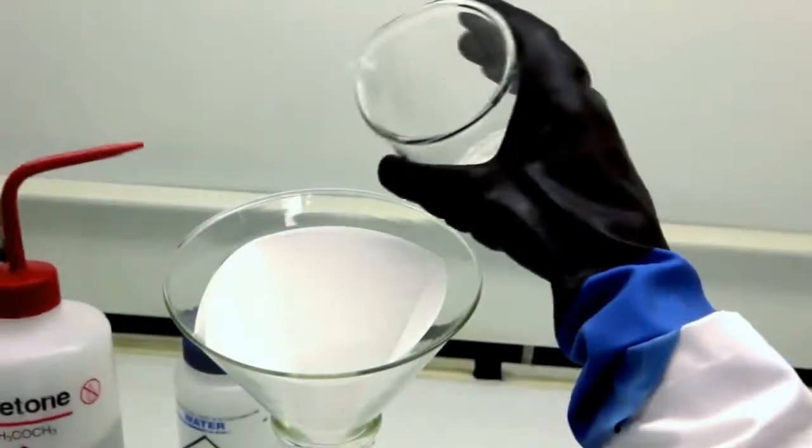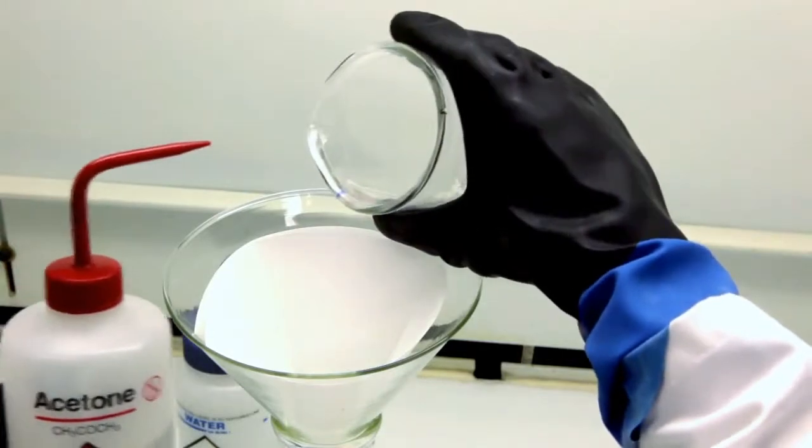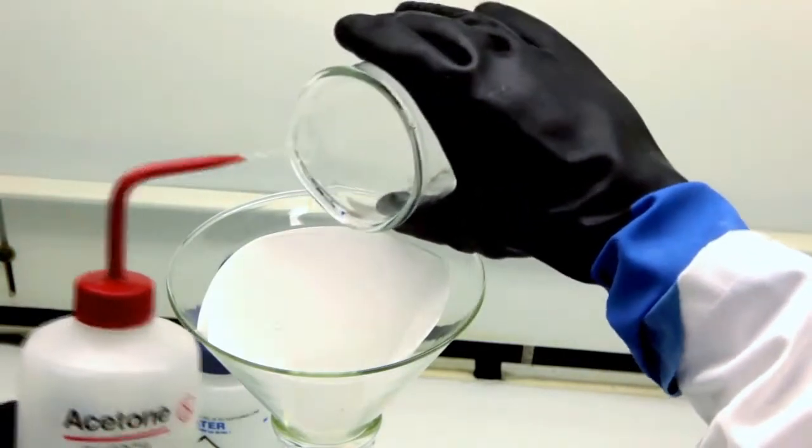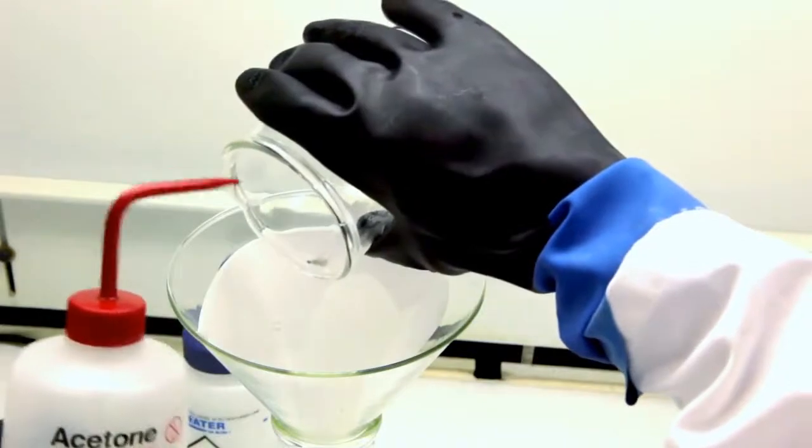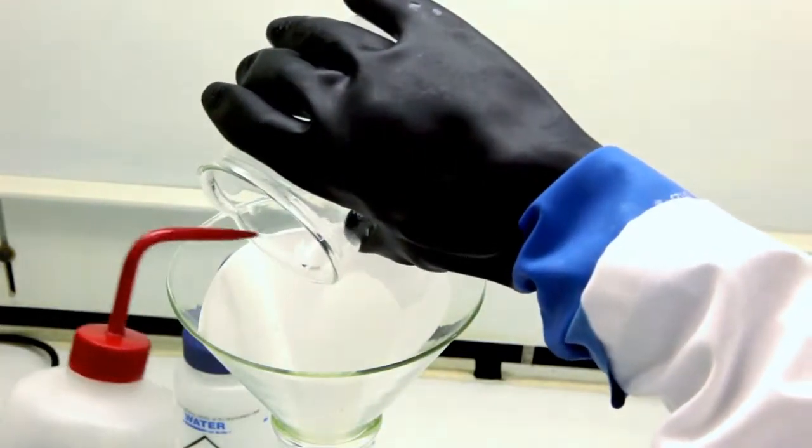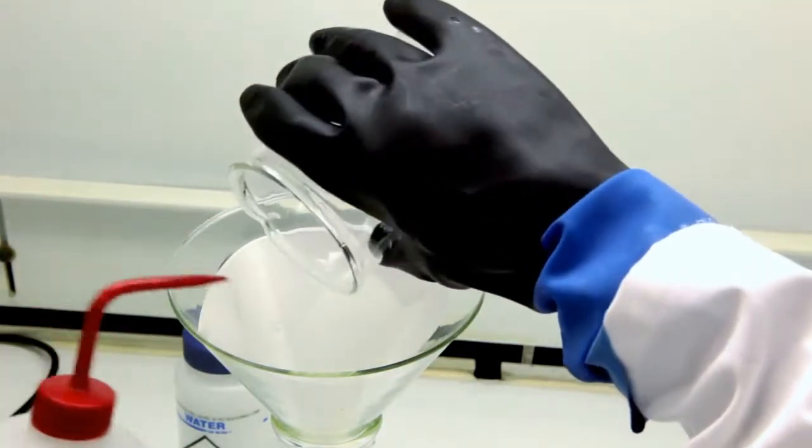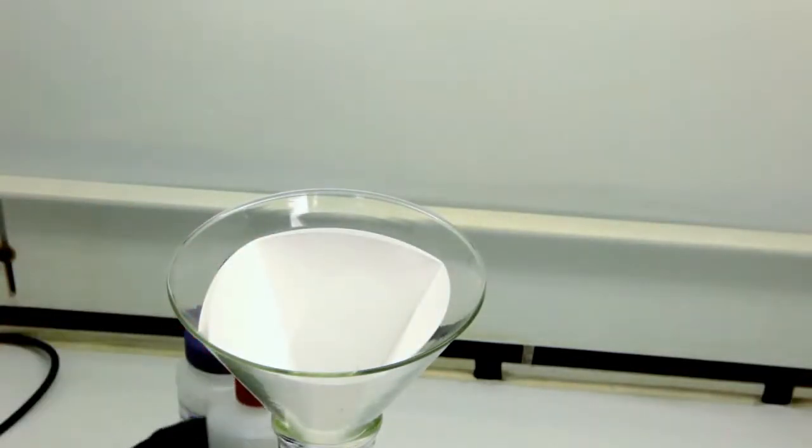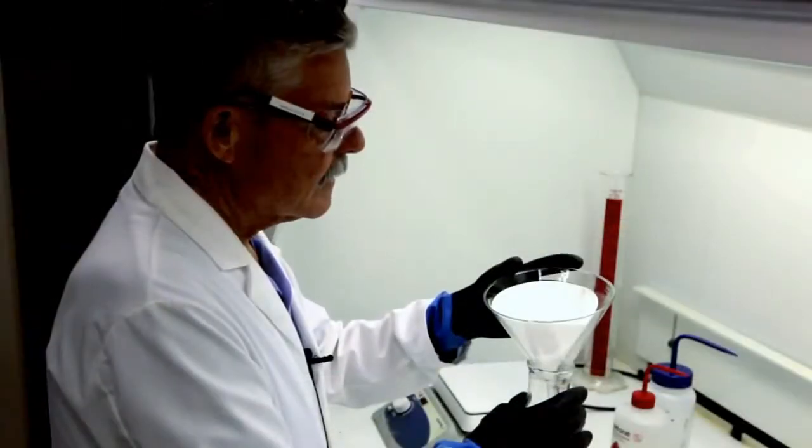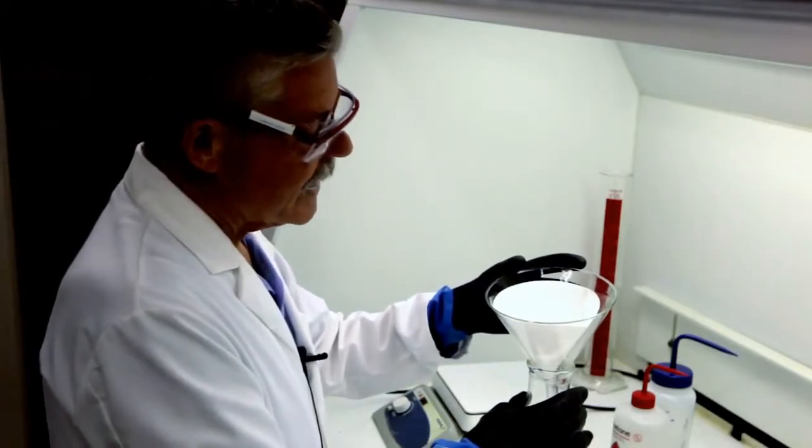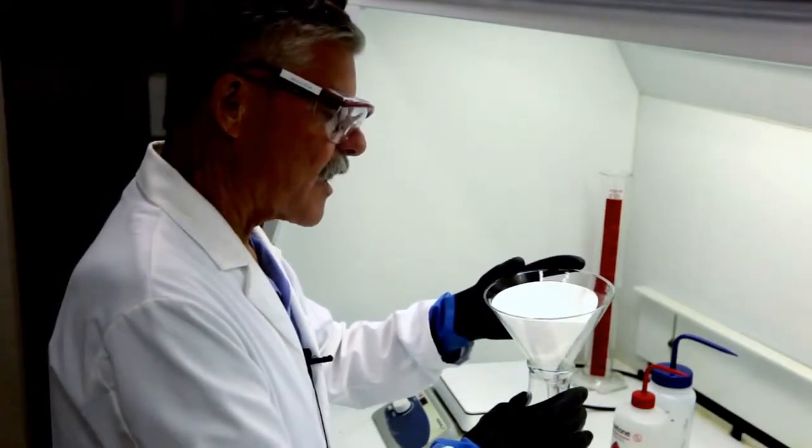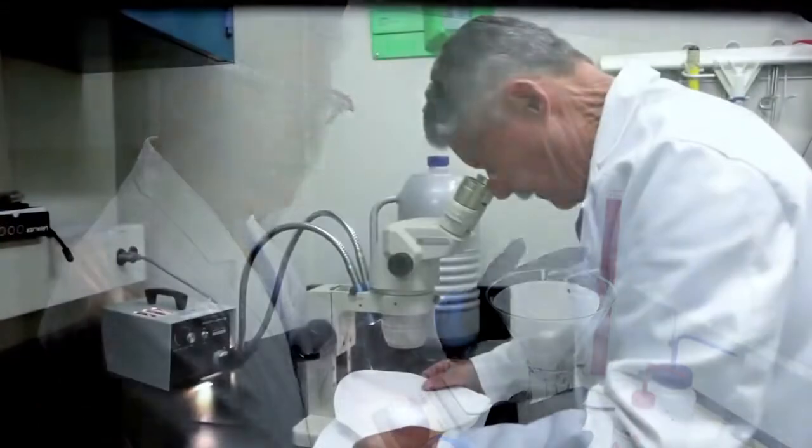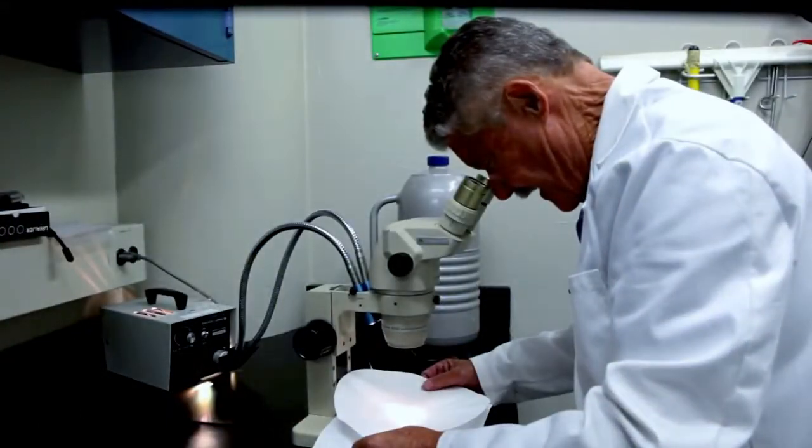Now that we've removed all of the nitric acid, we can rinse into the filter paper using acetone. We've thoroughly rinsed the sample with acetone and now it's just drying. I'm checking the sample that we've just acid washed.